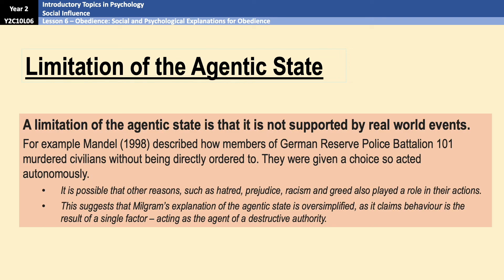However, a limitation of the agentic state is that it is not supported by real-world events. For example, Mandel (1998) described how members of a German reserve battalion murdered civilians without being directly ordered to do so — they were given a choice and because they chose to do it, they were acting autonomously. This suggests that other possible reasons, such as hatred, prejudice, racism, or greed, played a role in their actions, indicating that Milgram's agentic state explanation is oversimplified because it claims behaviour results from a single factor when in reality many other factors likely contribute to destructive actions.